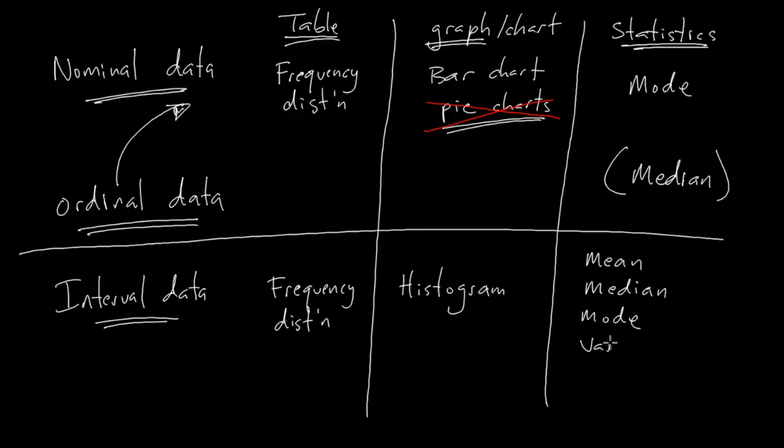The median also makes sense to work out for interval data. So does the mode, for that matter, so does the variance, and the standard deviation, and the coefficient of variation. All of these are the main things that you cover in Chapter 4.